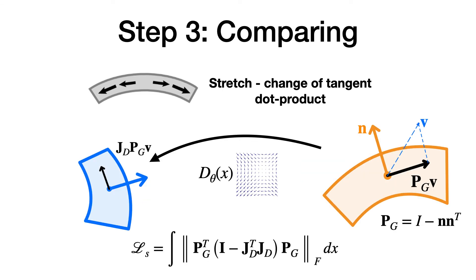Note that we can relate the tangent dot product to the spatial dot product by a projection matrix. We also know that tangent vectors can be transformed by the Jacobian of the deformation field. With this, we define a stretch loss that minimizes the change of tangent dot product.